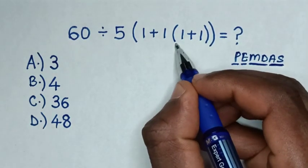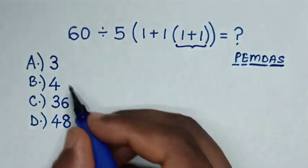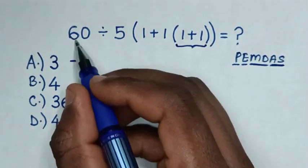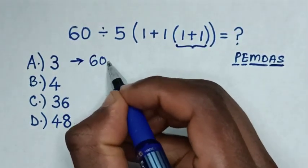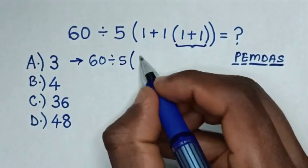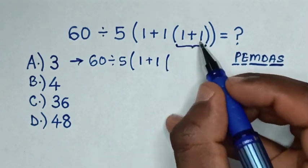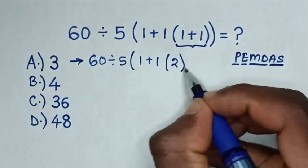So we'll start dealing with this addition inside this inner bracket. Then it will be 60 divided by 5, then bracket 1 plus 1, bracket 1 plus 1 is 2, then bracket bracket.